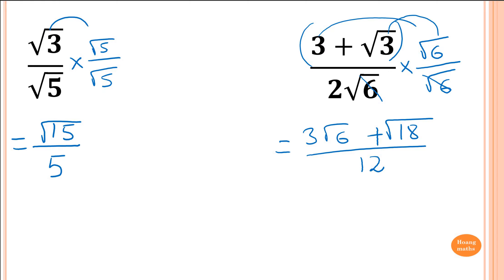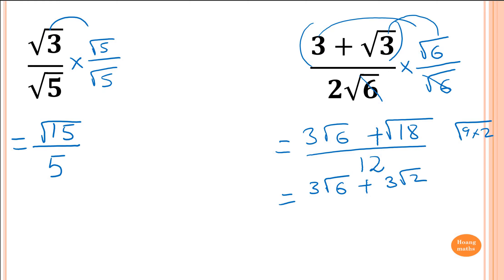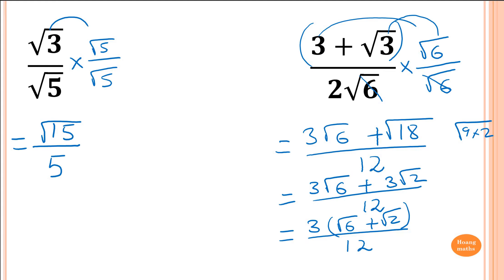Of course, we can simplify further because 18 is 9 times 2, so square root of 18 is square root of 9 times 2, which gives us 3 root 2. So the numerator becomes 3 root 6 plus 3 root 2, over 12. Now I can factorise by taking a 3 out — 3 is a common factor. So I take the 3 out: square root of 6 plus square root of 2, over 12. Now 3 and 12 can both divide by 3: 3 divided by 3 is 1, and 12 divided by 3 is 4. So the final answer is square root of 6 plus square root of 2, all over 4.